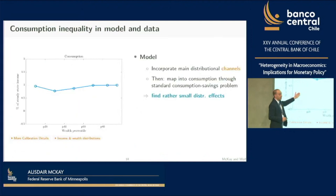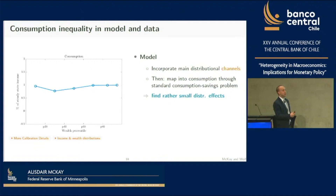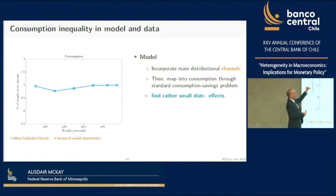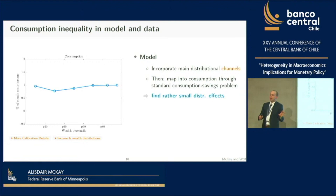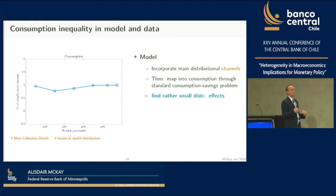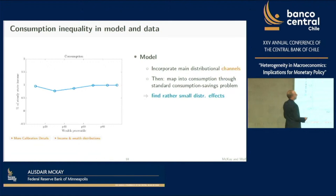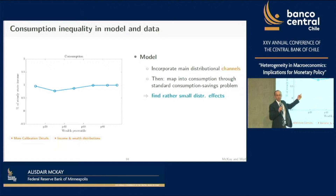Here's a key figure: on the horizontal axis is your percentile in the wealth distribution; on the vertical axis is how your consumption responds on impact after an expansionary monetary shock. The key finding is that it's pretty flat—households in the low-wealth bucket and high-wealth bucket react similarly to the expansionary monetary policy shock. So consumption shares aren't moving much, since if everyone moves consumption in the same proportion, consumption shares don't change. This shows that theta_omega is close to zero.